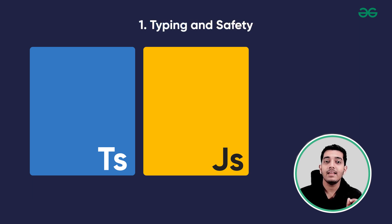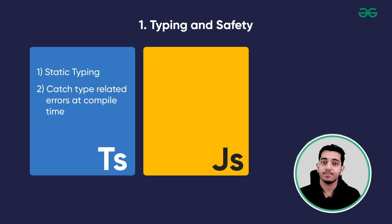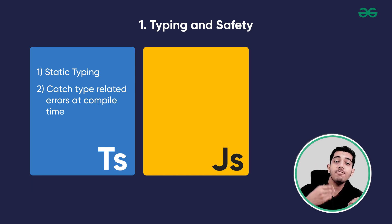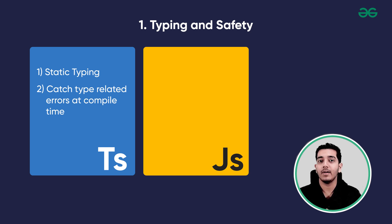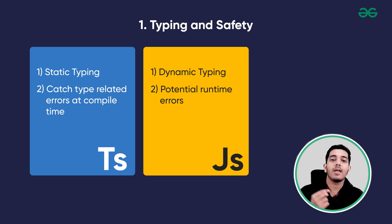Number one: typing and safety. TypeScript offers static typing which can catch type-related errors at compile time and provides better tooling support for code navigation and refactoring. This can be particularly beneficial for large codebases and collaborative development. JavaScript, on the other hand, is dynamically typed, allowing for more flexibility but potentially leading to runtime errors that may be harder to catch during development.